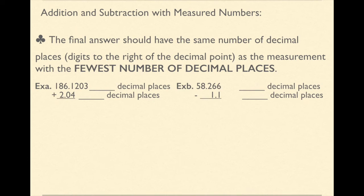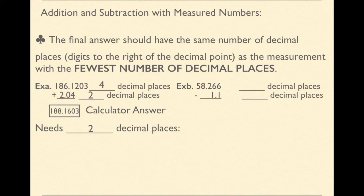How many decimal places does 186.1203 have? Well, it has four decimal places. 2.04 has two decimal places. So when I add those two values together, I end up with 188.1603. So my final answer is going to need two decimal places. So that's going to round to 188.16.